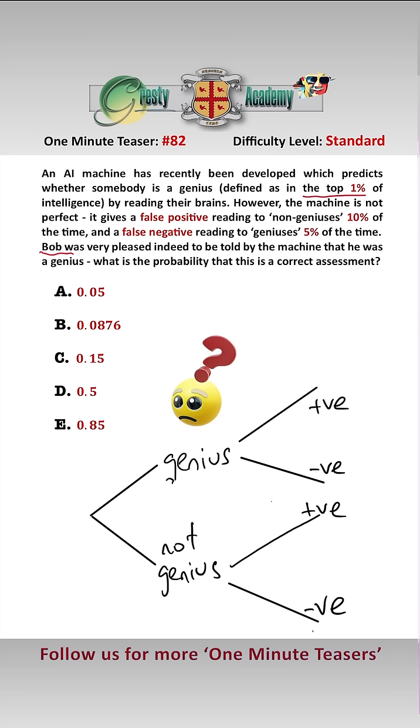Okay, so we defined the top 1% is a genius, so therefore the actual probability of being a genius is 0.01, which means 0.99 probability is not a genius.